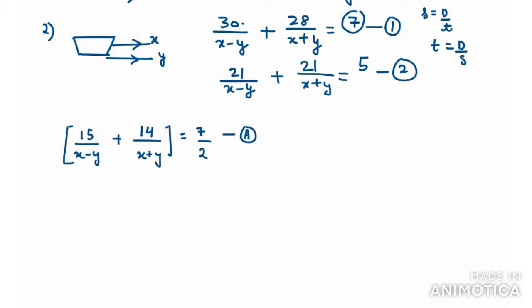Now reduce the second equation. From the left hand side take 21 as common. You are left with 1 over x minus y plus 1 over x plus y equals 5 over 21. This will be equation number B.